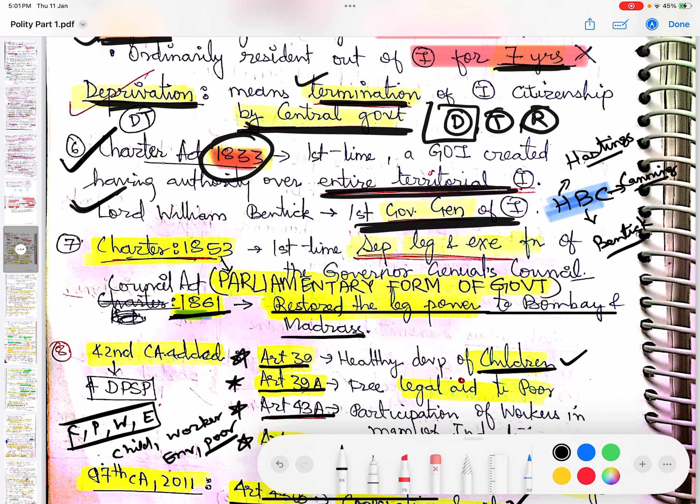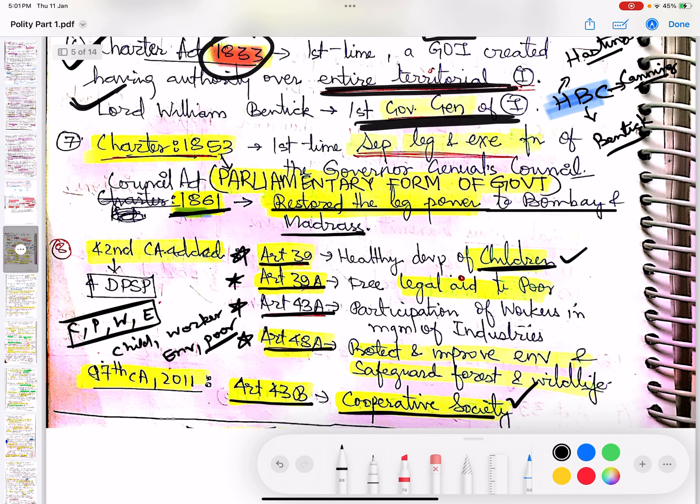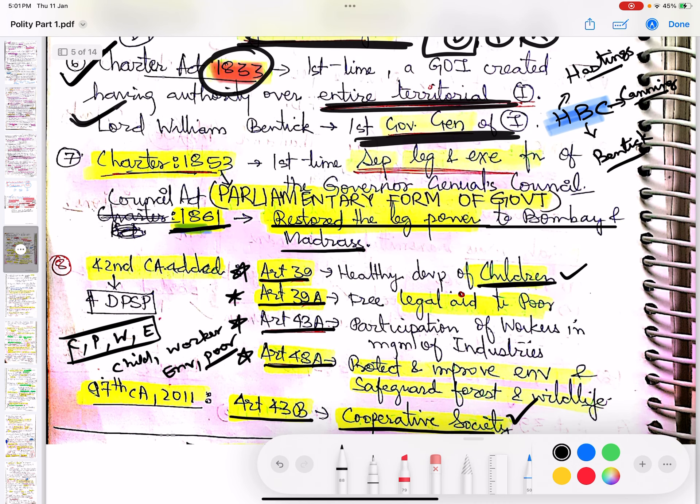Charter Act of 1853 - for the first time it separated the legislative and executive functions of the council. This introduced a parliamentary form of government. So for the first time in India, parliamentary form of governance evidence was the Charter Act of 1853, because it separated legislative and executive functions of the Governor General Council.